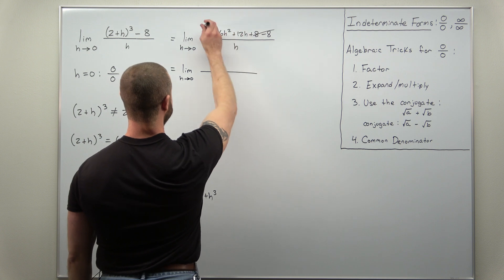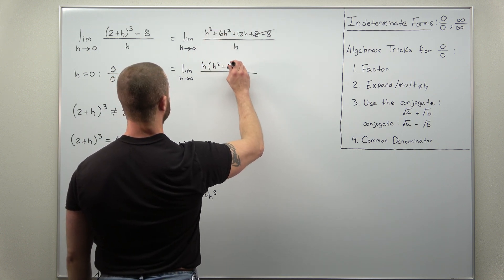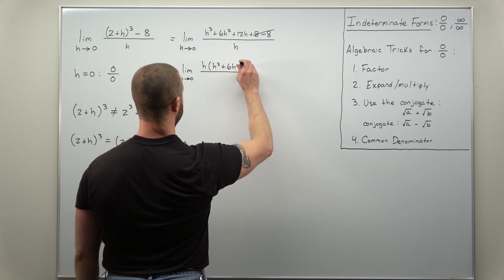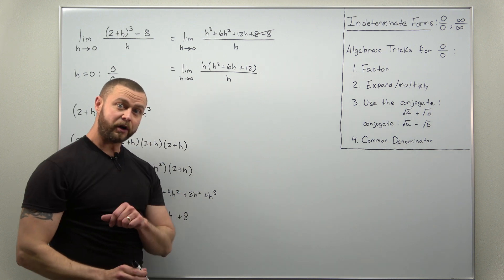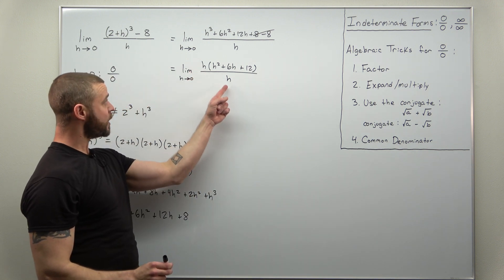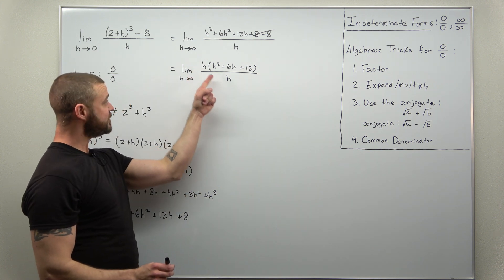I'm going to factor h out, so we'll be left with h² + 6h + 12, that's all over h. And notice here, this is where your indeterminate form cancels.